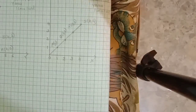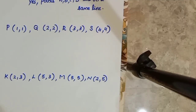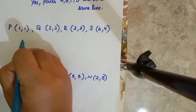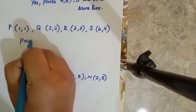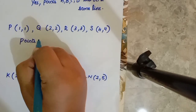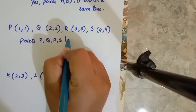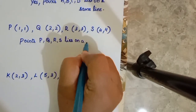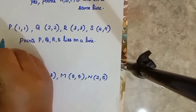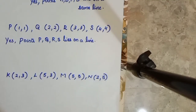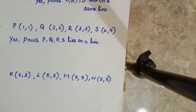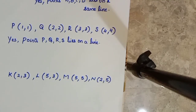PQRS lies on the same line. So we can take the same line. Now we will see the points: PQRS lies on a line. That is the line. The points PQRS lie on a line. We will see the points.